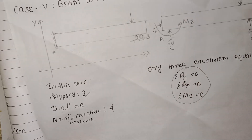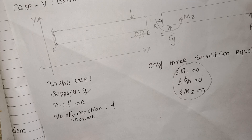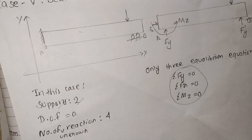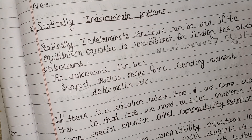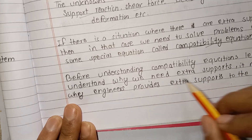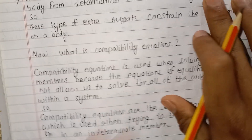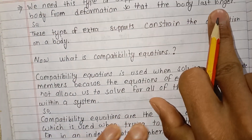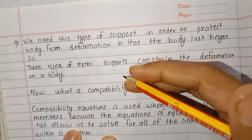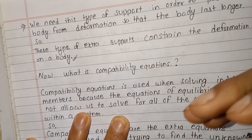When the number of unknowns exceeds the equilibrium equations, the problem cannot be solved using equilibrium alone. We need to use compatibility equations. Before understanding compatibility equations, let's understand why engineers provide extra supports to a beam. Extra supports are provided in order to protect the body from excessive deformation so that the body lasts longer.